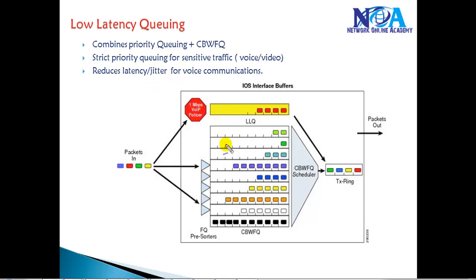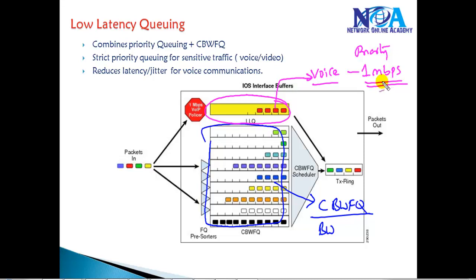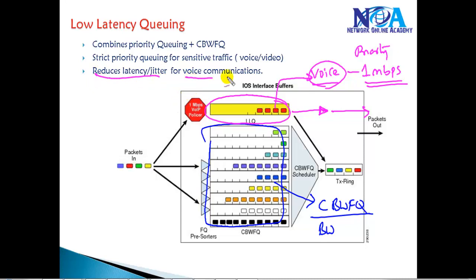We are going to use the same class-based weighted fair queuing as before, defining minimum guaranteed bandwidth using the bandwidth option for some traffic. Additionally, we define a separate class where we match voice traffic and assign it a priority with a specific bandwidth value. Once we define the priority for voice traffic, it guarantees the maximum amount of bandwidth to voice with high priority. This ensures voice traffic is not queued — it is sent first before other traffic classifications.